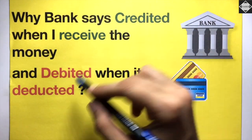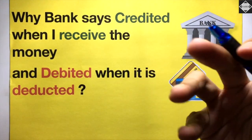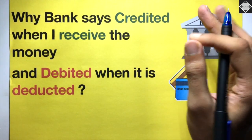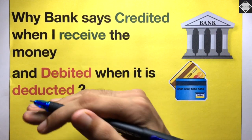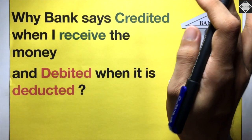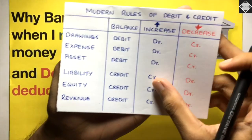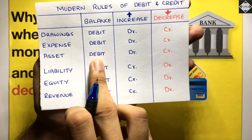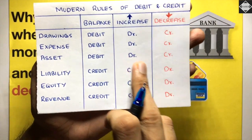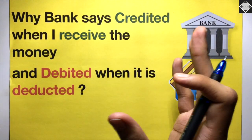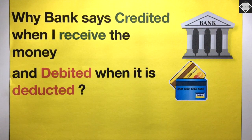So what is the reasoning behind why the bank uses these terms in this way? When you study accounting as a beginner, you learn that whenever money comes in you debit, and whenever money goes out you credit — the golden rules. Or under modern rules, the bank account is an asset account with a debit balance, so it increases on debit and decreases on credit. So why does the bank say 'credited' means increase and 'debited' means decrease — the opposite?